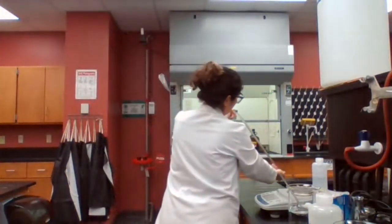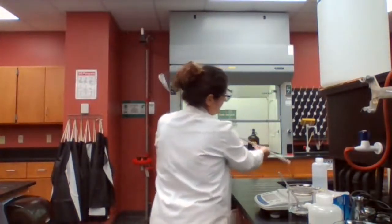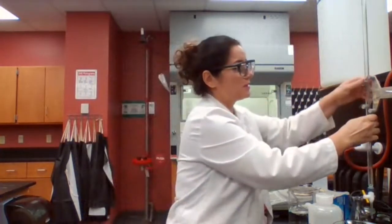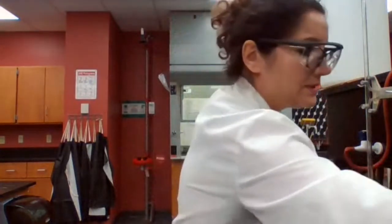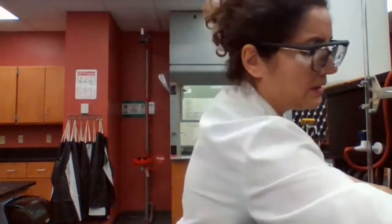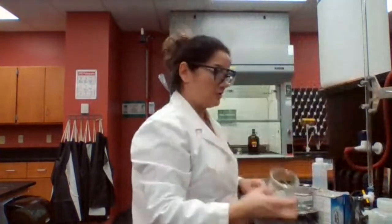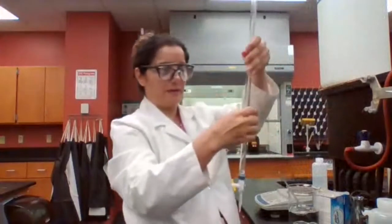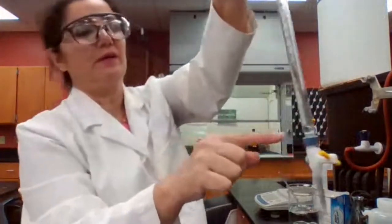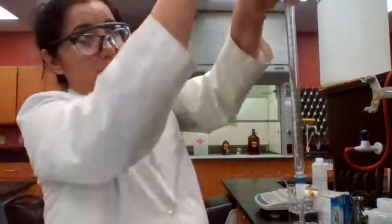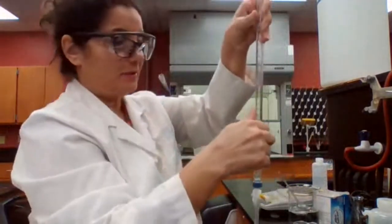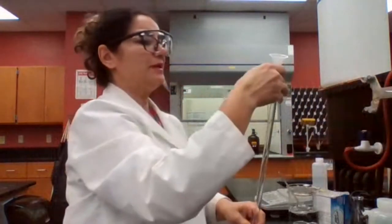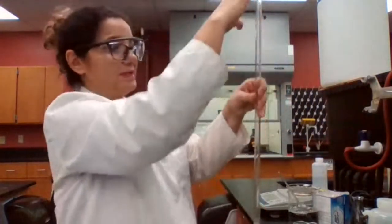Next we want to rinse it. The burette is clean now, but we want to rinse it with sodium hydroxide. Why do we need to rinse it with sodium hydroxide? Because after you wash with deionized water, there might be some drops of the deionized water. You could still see that here, some drops of deionized water in the burette, and that could dilute the solution that we are using.